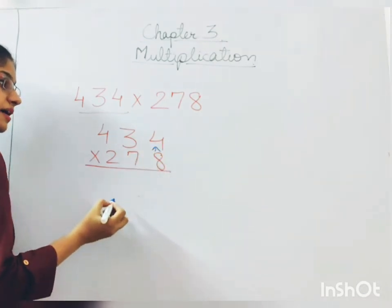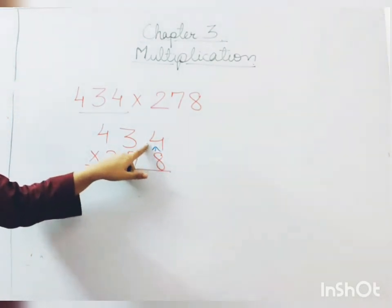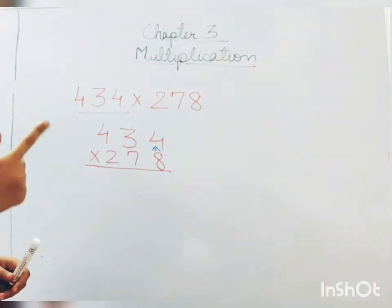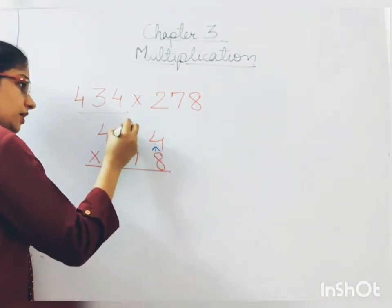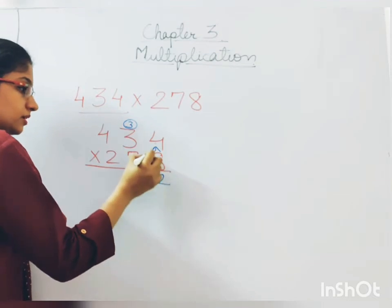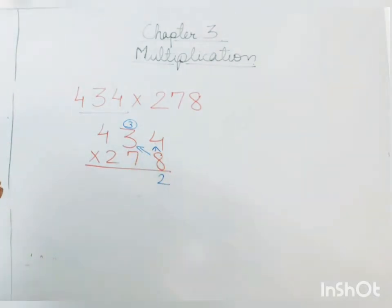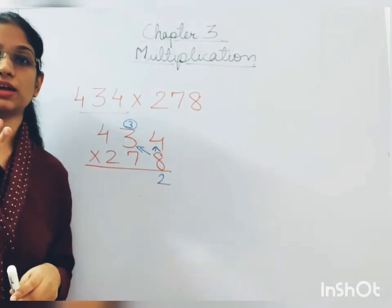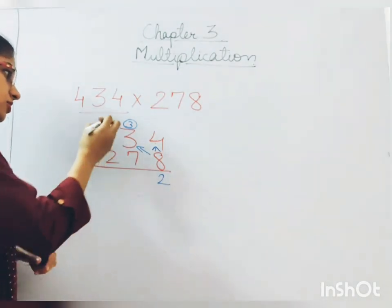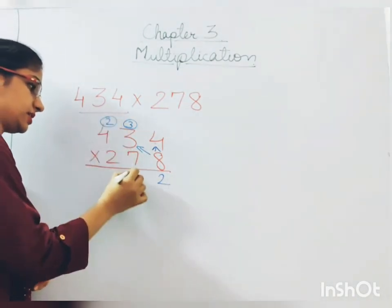8 multiplied by 4. 8 4s are? 8 1s are 8, 8 2s are 16, 8 3s are 24, 8 4s are 32. So 3 above and 2 down. 8 3s are? 8 3s are 24. 24 plus 3. 25, 26, 27. So 2 will go up and 7 will stay down.